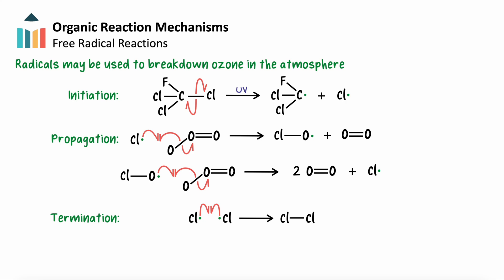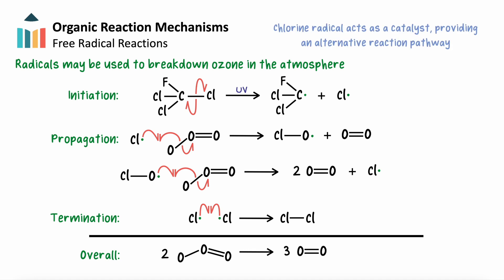The overall equation for this reaction is similar to what we saw before, with the destruction of ozone with UV light. However, the chlorine radicals here provide an alternative reaction pathway, and increase the rate of this reaction. The chlorine radical therefore acts as a catalyst, and in doing so, makes the introduction of CFCs into the atmosphere particularly devastating for the ozone layer.